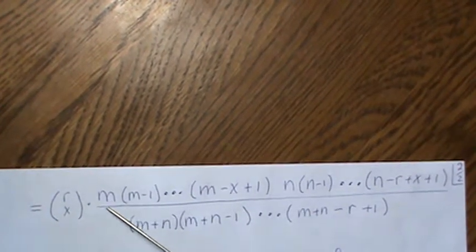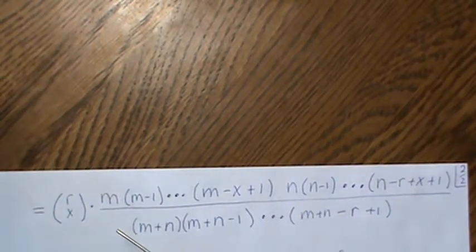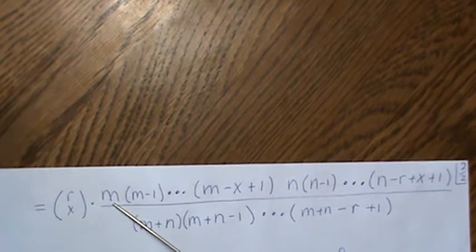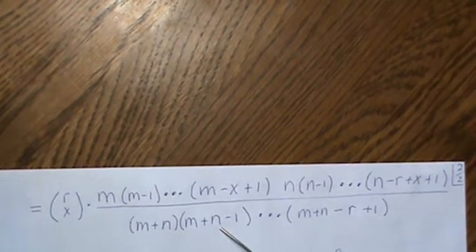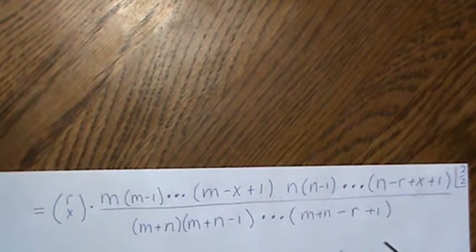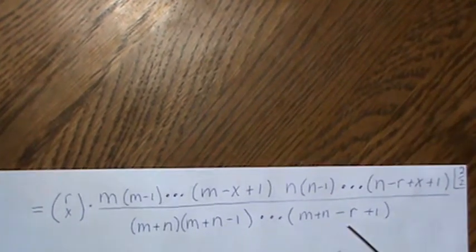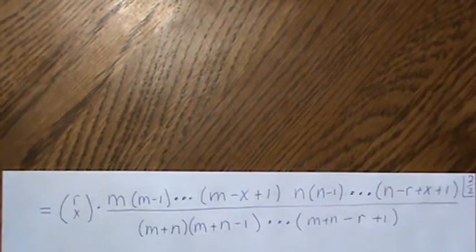So then what we do is we divide each term by m plus n. So we divide it here, then divide it here, divide it here, divide it here. So really we're multiplying by 1, but we're dividing because it's going to help us in the limit.